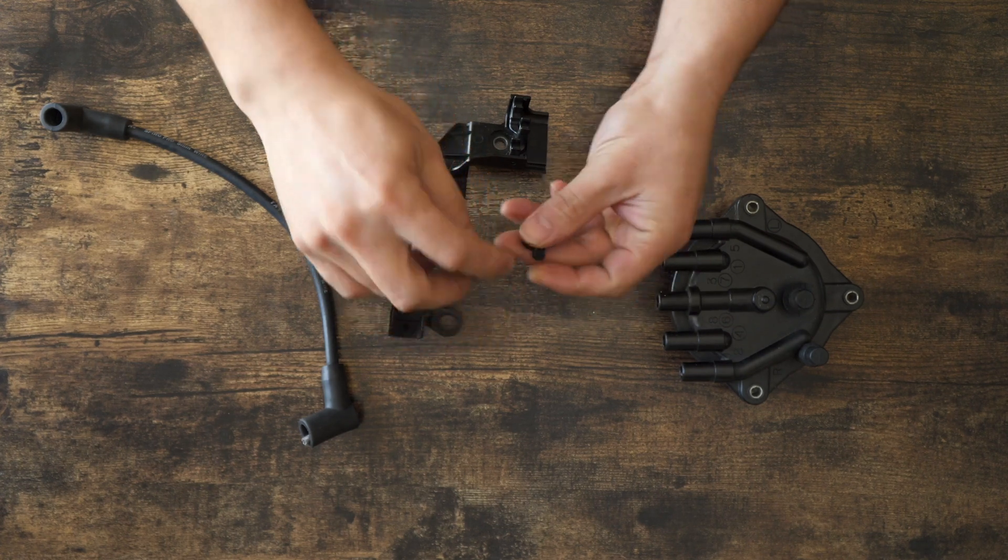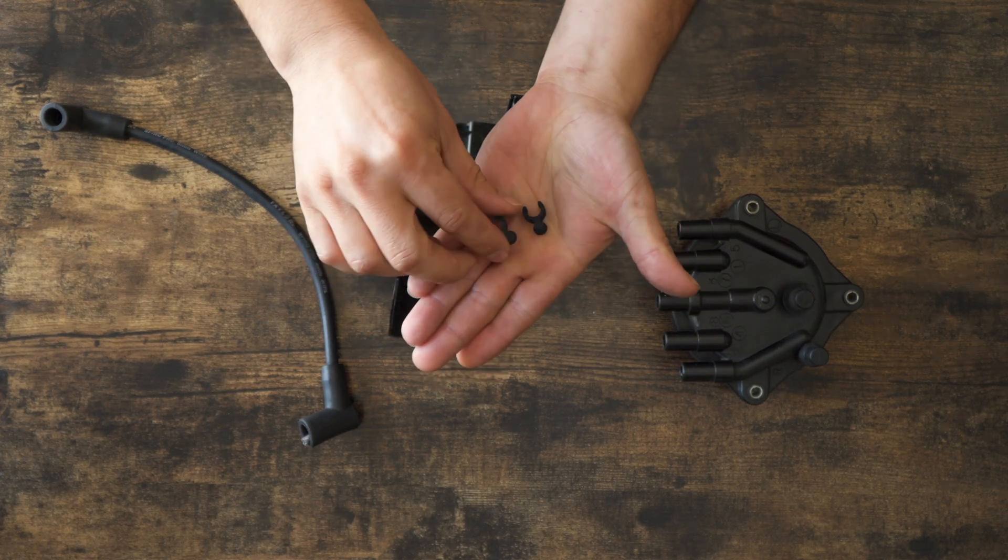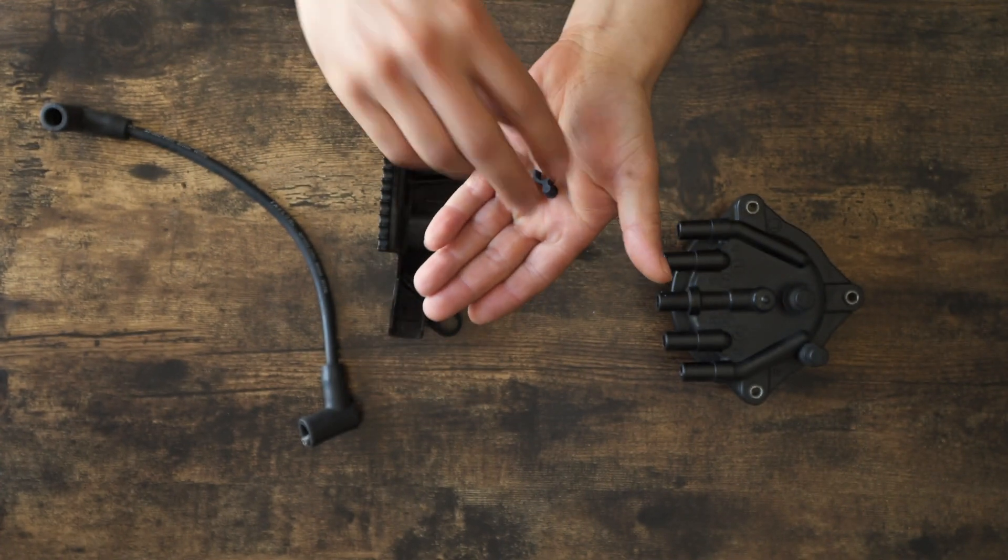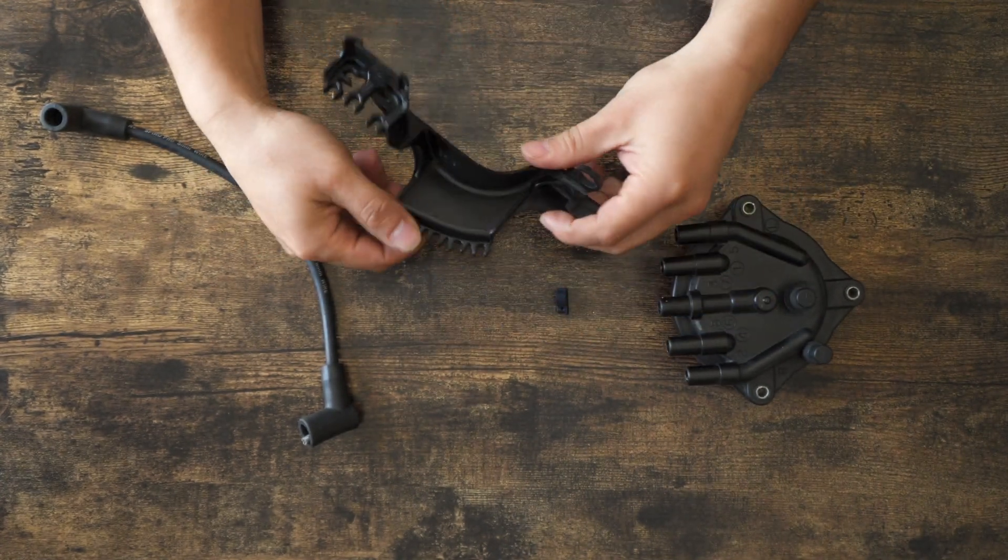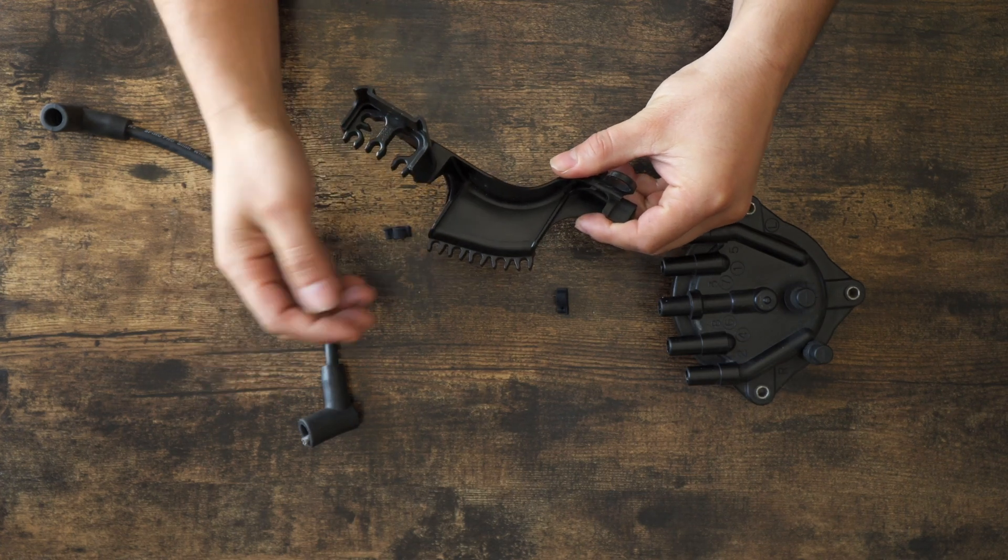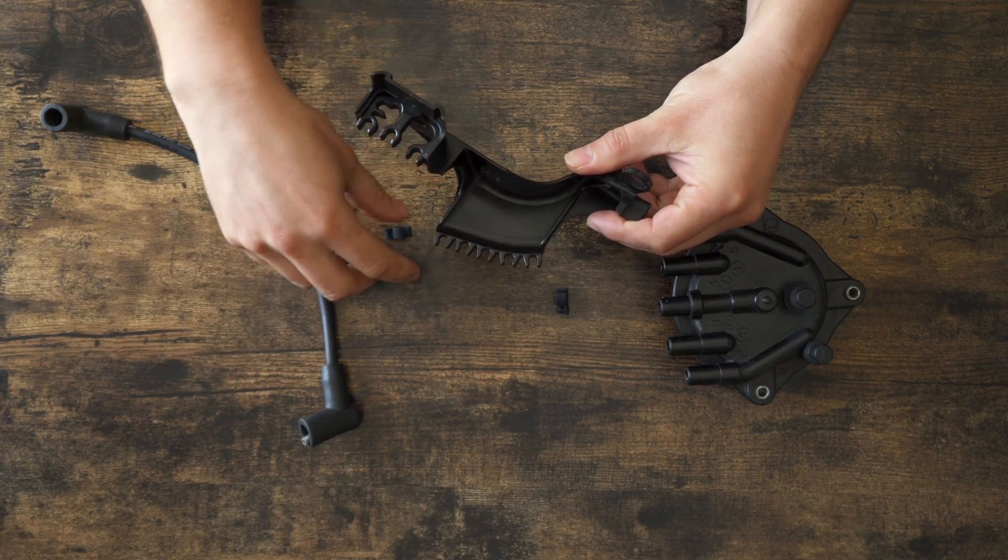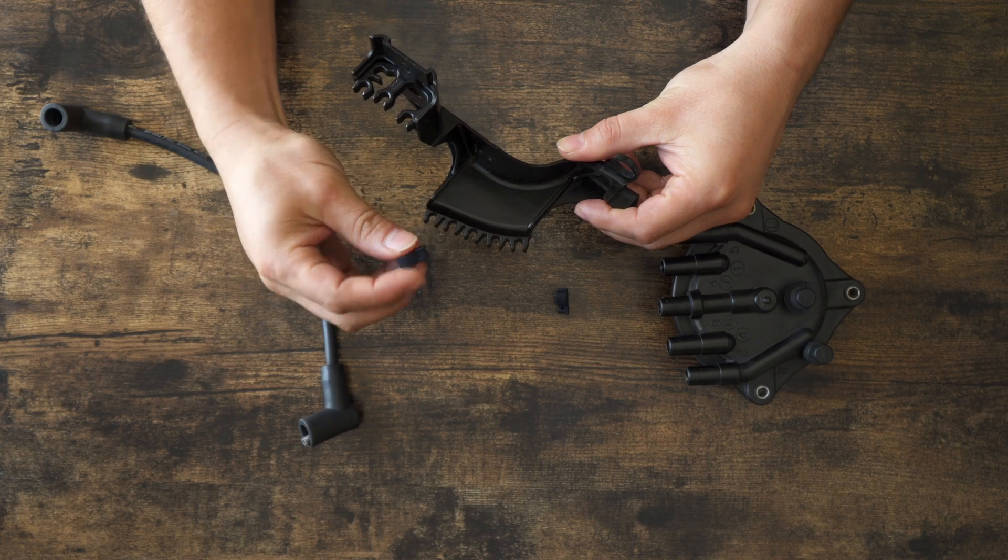So we made these little spark plug wire holders right here. And these, we have two, one for each side, and these are going to go into this slot. So again, the five millimeter wires usually go in here, but what we're going to do, we're going to take these.